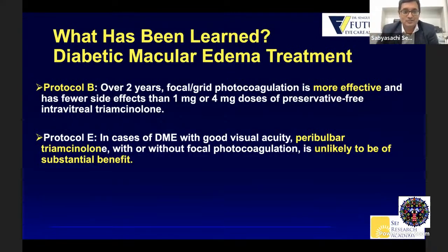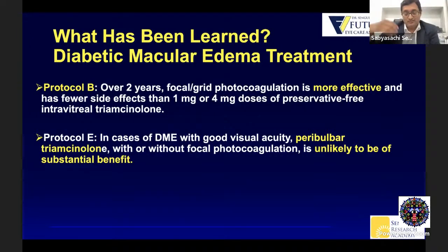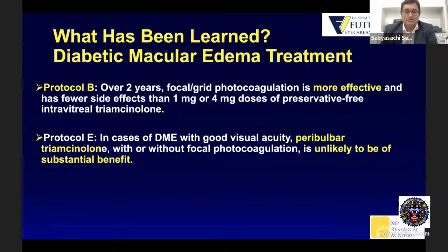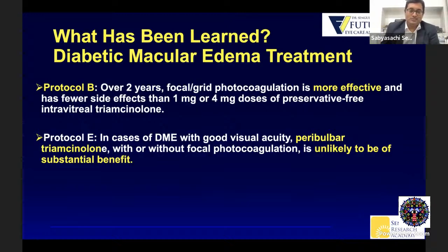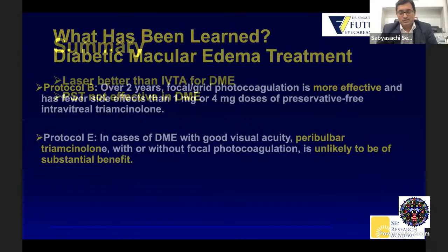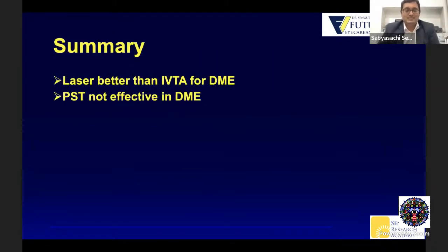The earliest study was Protocol B, which said that over two years, focal grid photocoagulation is more effective and has fewer side effects than one milligram or four milligram doses of preservative-free intravitreal triamcinolone. So even in the early phases, intravitreal triamcinolone was inferior to focal grid photocoagulation. Then Protocol E said that in cases of DME with good visual acuity, peribulbar triamcinolone with or without focal photocoagulation is unlikely to be of substantial benefit. So the first summary points are: laser is better than IVTA for DME, and posterior subtenon steroid does not work for DME.